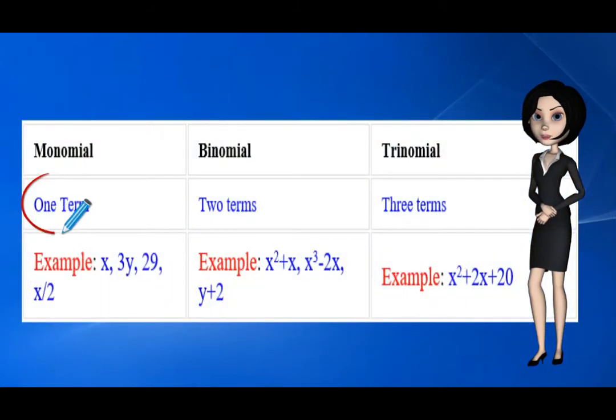So monomial has one term, binomial has two terms, trinomial has three terms.